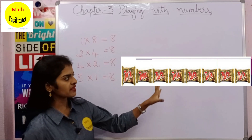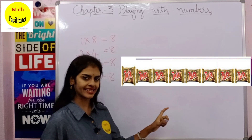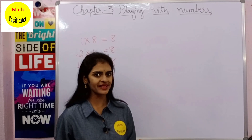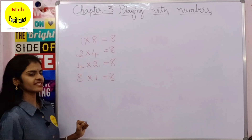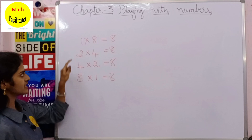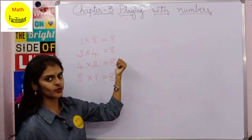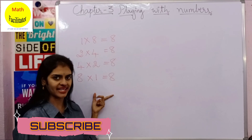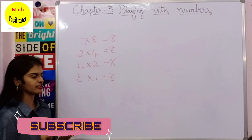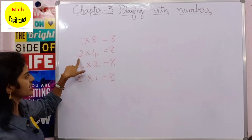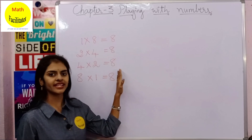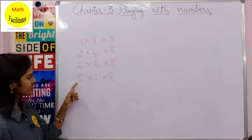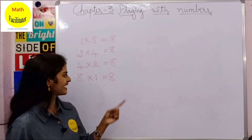What have we done here? We arranged chocolates in rows such that each row gets the same number. Other than these arrangements, are there any other arrangements possible? No. We wrote: 1 into 8 is 8; 2 into 4 is 8; 4 into 2 is 8; and 8 ones are 8. Now, if you closely observe, all these numbers on the left-hand side completely divide the number on the right-hand side, which is 8. So all these numbers are exact divisors of 8.